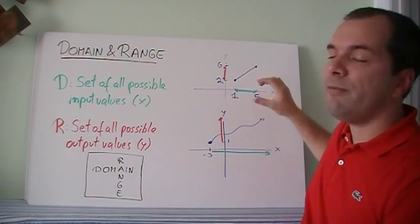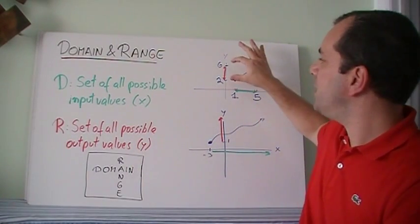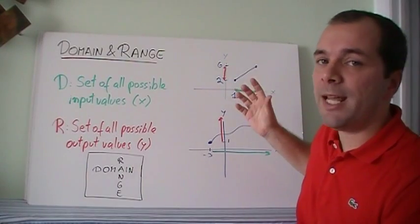And the range is what kind of outputs can I have? Well, my y values can go from 2 to 6. Nothing outside of that.